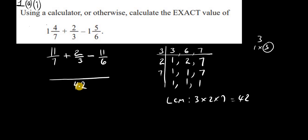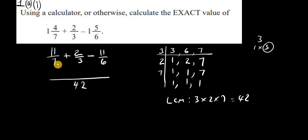Now, 42 divided by 7 gives us 6. In other words, 7 times 6 is 42, so if we multiply by 6, we get 42. We multiply the numerator 11 by 6 as well, giving us 66. Then 42 divided by 3 — we work out that 3 goes into 42 fourteen times, so we multiply the numerator 2 by 14, giving us 28.